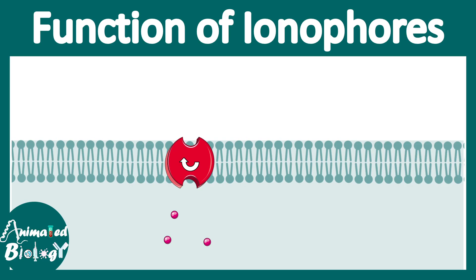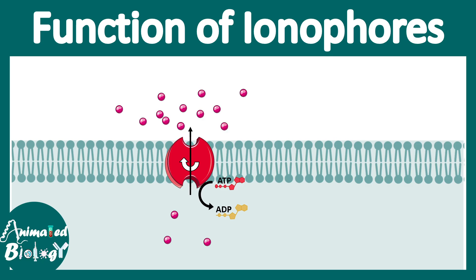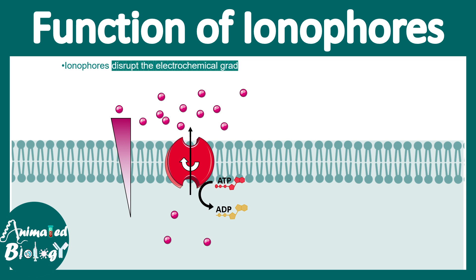Now imagine a scenario where a particular ion channel is an ATPase and it hydrolyzes ATP to transport ions — shown in pink — to the extracellular side, thereby creating an ionic gradient. We can see this gradient with more ions on the outer side than the inner side. Now imagine there is also an ionophore present in this same context.